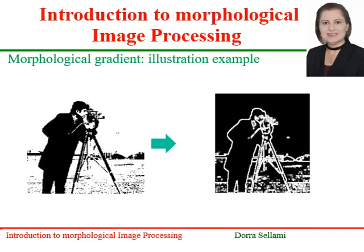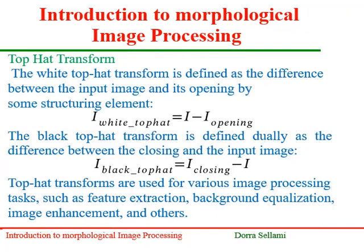It is recommended to apply a cleaning step before gradient computing to get rid of false contours. Another important operator is the top hat transform. The white top hat transform is defined as the difference between the input image and its opening. The black top hat transform is defined as the difference of the closing and the input image, given by closing minus I. Top hat transforms are used for various image processing tasks such as feature extraction, background equalization, and others.